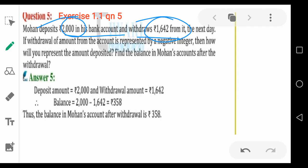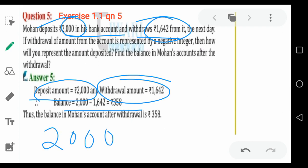Deposit amount is 2000 rupees. Withdrawal amount is 1642 rupees. So what balance is left? Balance amount is 2000 minus 1642. Just subtract. What is the answer?